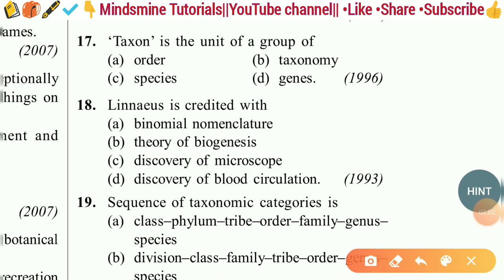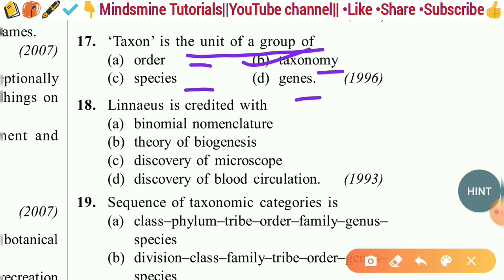Question seventeen: A taxon is a unit or group of — order, species, taxonomy, or genes? The correct answer is option B — taxonomy. A taxon is a unit or group within taxonomy.